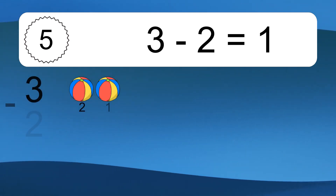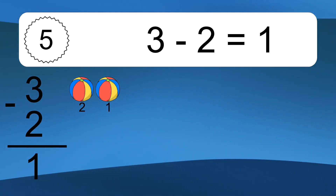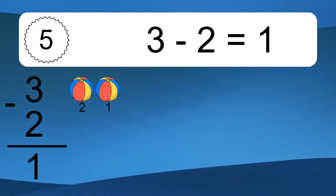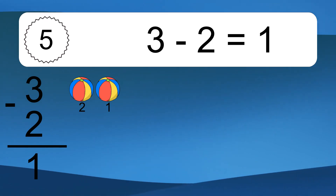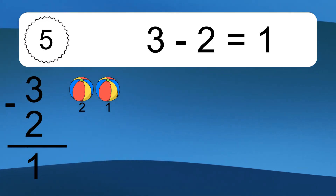3 minus 2 equals what? 3 minus 2 equals 1. Let's count it. 2, 1.